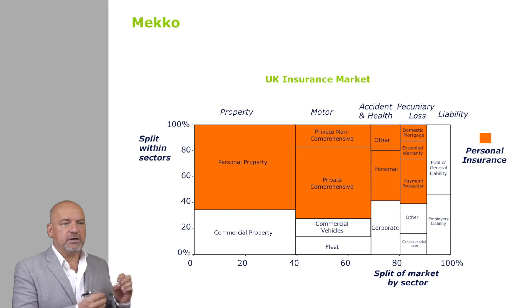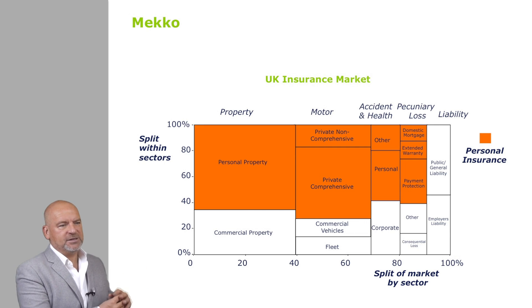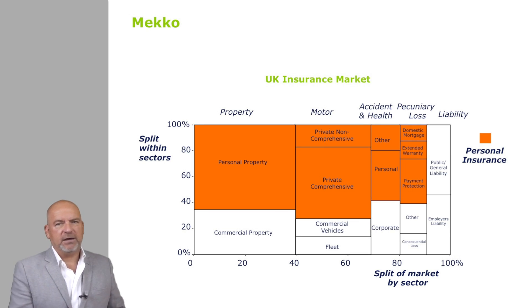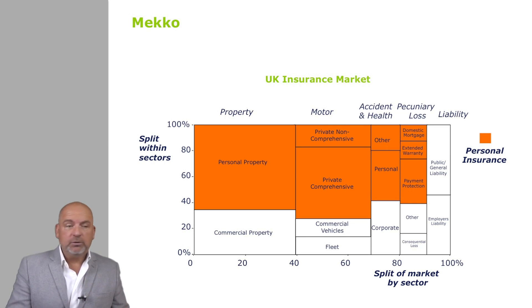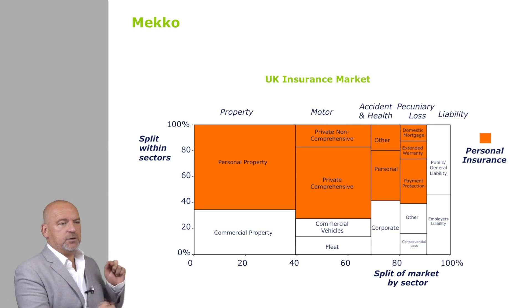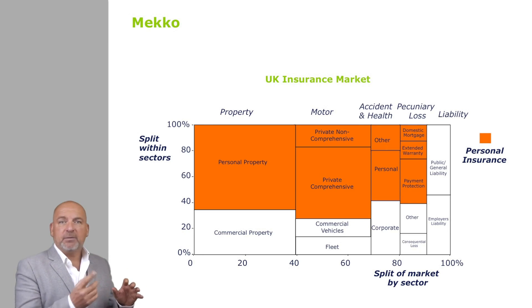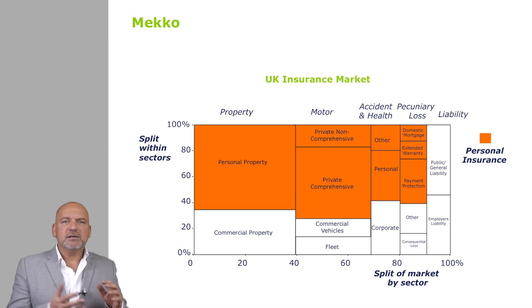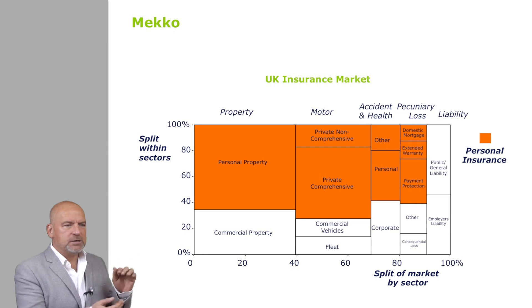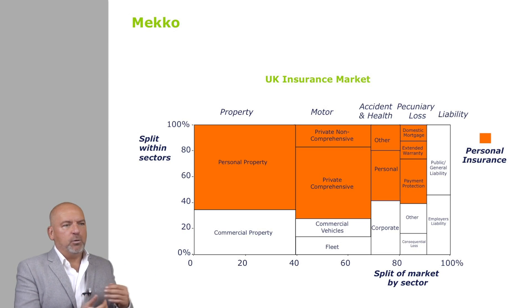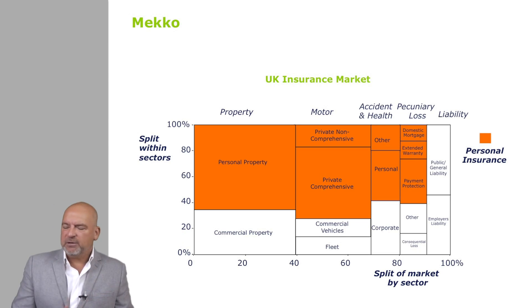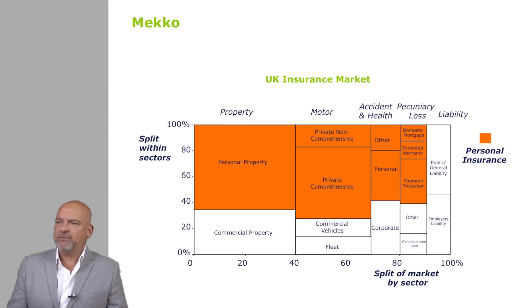The only data series you can't put in a MECO are ones where the numbers change sign. For example, you can't put profit, because if you did a MECO for various business units, some of them would have negative profits and you wouldn't be able to show that. But you could use costs — you can use a MECO to represent the total costs of a company, and in particular when we look at company analysis, a well-crafted MECO can show your cost structure in a way you've never seen before.